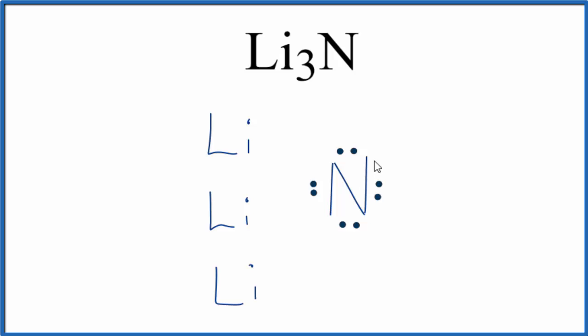At this point, the nitrogen has gained three electrons. Electrons are negative, so it'll have a three minus ionic charge.